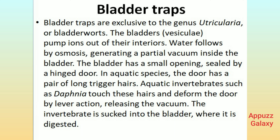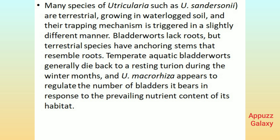Bladder traps are exclusive to the genus Utricularia, or bladderworts. The bladders (vesiculi) pump ions out of their interiors. Water follows by osmosis, generating a partial vacuum inside the bladder. The bladder has a small opening sealed by a hinged door. In aquatic species, the door has a pair of long trigger hairs. Aquatic invertebrates such as Daphnia touch these hairs and deform the door by lever action, releasing the vacuum. The invertebrate is sucked into the bladder, where it is digested. Many species of Utricularia, such as U. sandersonii, are terrestrial, growing in waterlogged soil, and their trapping mechanism is triggered in a slightly different manner.